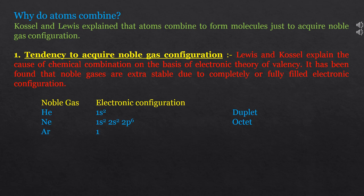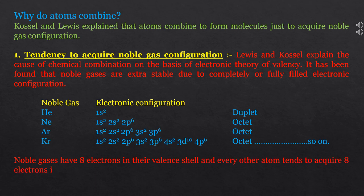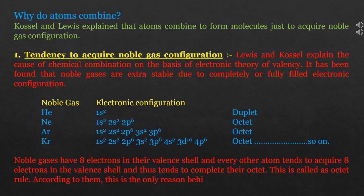In case of argon, its electronic configuration is 1s2 2s2 2p6 3s2 3p6, so the valence shell is third and fully filled — octet is complete. In case of krypton, the outermost shell is fourth with configuration 4s2 4p6, and octet is also complete. So noble gases have 8 electrons in their valence shell, and every other atom tends to acquire 8 electrons in their valence shell — completing their octet. This is called the octet rule, and according to Lewis and Kossel, this is the reason behind chemical combination.